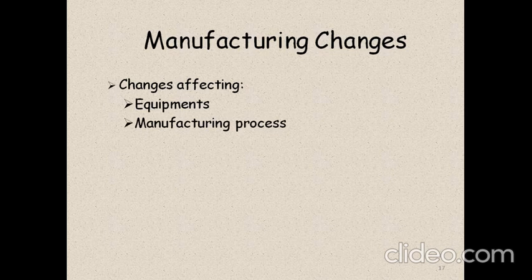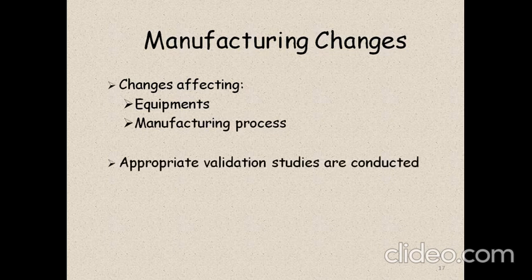Manufacturing changes in terms of equipment and manufacturing process are covered separately — separate guidelines for equipment and separate guidelines for process. Appropriate validation studies are conducted for both equipment and process.